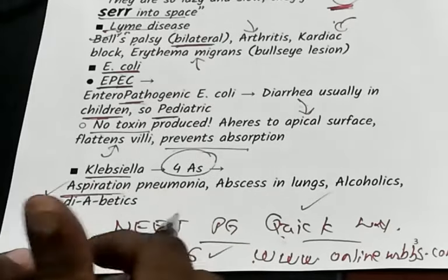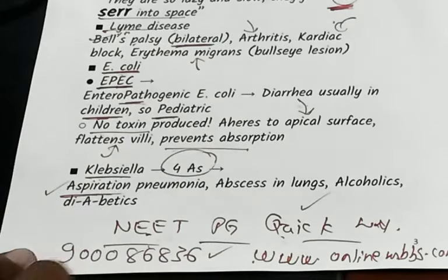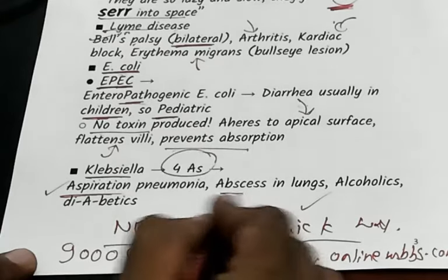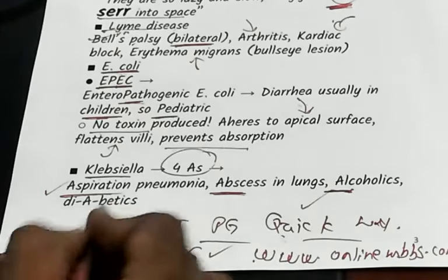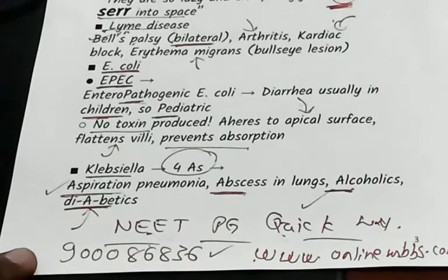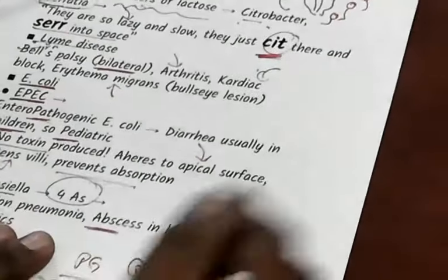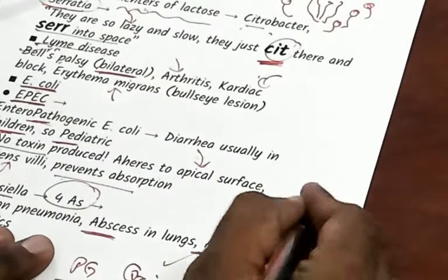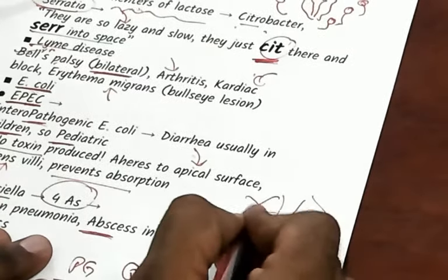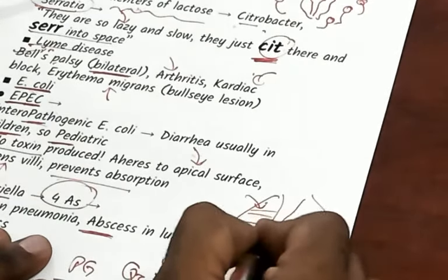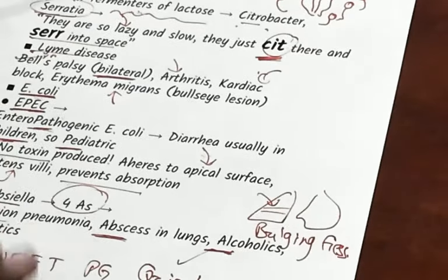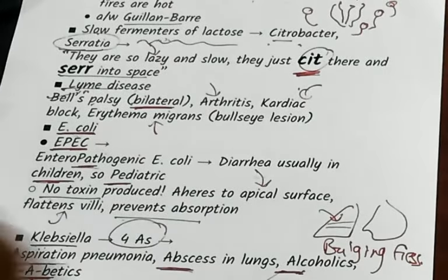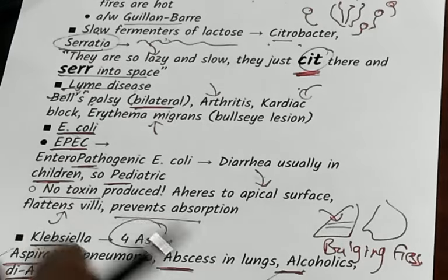Remember Klebsiella: it causes aspiration pneumonia in alcoholics and diabetics. Klebsiella leads to lung abscess and is common in alcoholics and diabetics. A key radiological sign is the bulging fissure sign — fluid accumulation in the minor fissure. Let us make the best use of the hundred days before the NEET-PG exam.